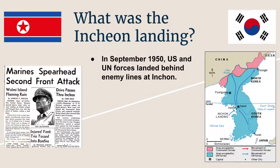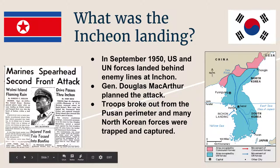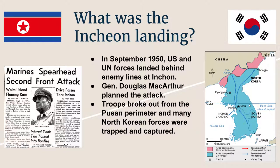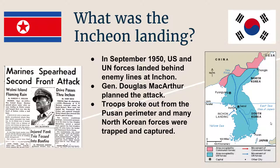The Incheon Landing was extremely effective. MacArthur's forces were able to break out from the Pusan Perimeter, and many North Korean forces ended up trapped and captured in the southern part of Korea. Once the forces came in at Incheon, they created a wall across Korea, cutting off North Korean reinforcements. They then pushed deep into the north, almost all the way to the Yalu River — the border between China and Korea — nearly winning the war.